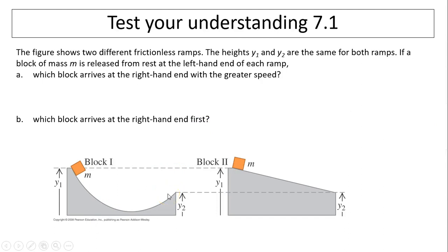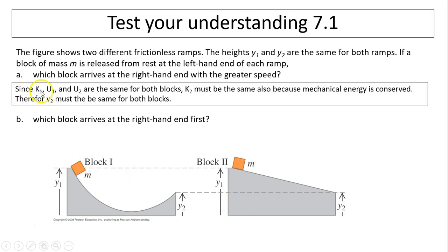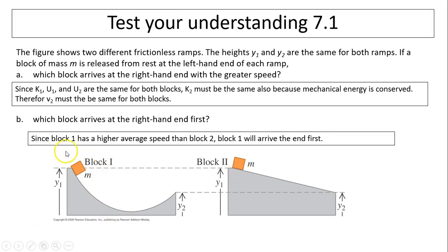Test your understanding: the figure shows two different frictionless ramps with the same heights Y1 and Y2. A block of mass M is released from rest at the left end. Which block arrives at the right end with greater speed? Since both ramps are frictionless and only gravity does work, total mechanical energy is conserved. Since K1, U1, and U2 are the same for both blocks, K2 must be the same and therefore V2 must be the same — they have equal speeds. Which block arrives first? Block 1 has a bigger initial drop, giving it a greater average speed, so block 1 reaches the end first. That's it for today, thanks for watching.